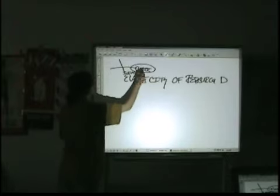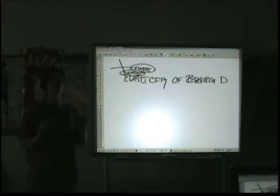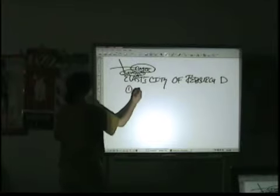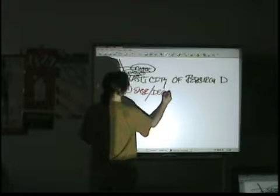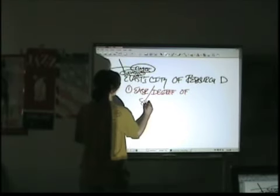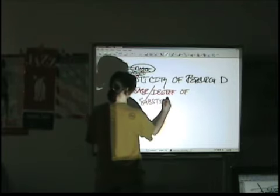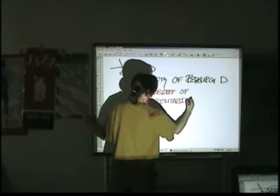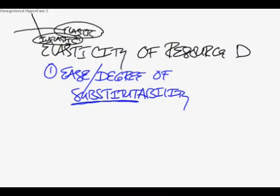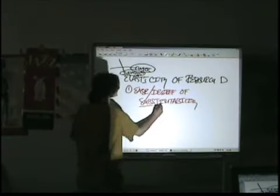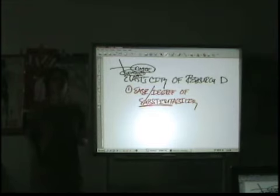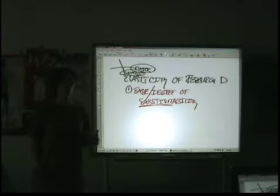So what can have an impact on the shape of the curve? The first thing is how substitutable the resources are — the ease or degree of substitutability. In other words, how easy is it to substitute one resource for another? If it's a resource that has no substitutes, then you would expect demand to be more inelastic, because they're not going to be that responsive to a change in price. If it's something they have to use, then they have to use it.